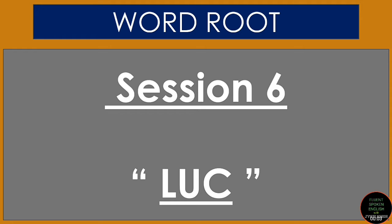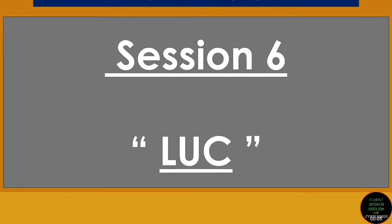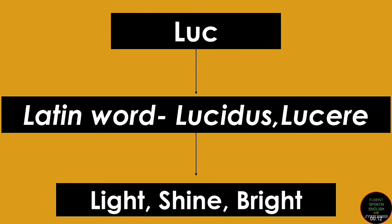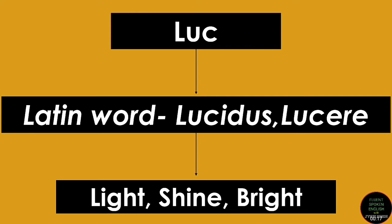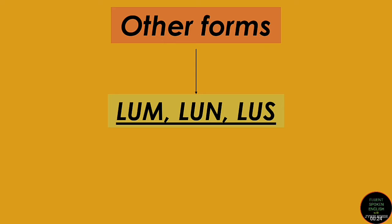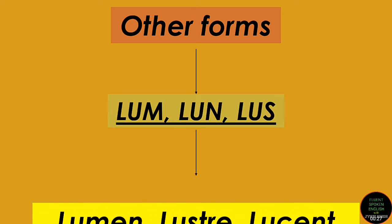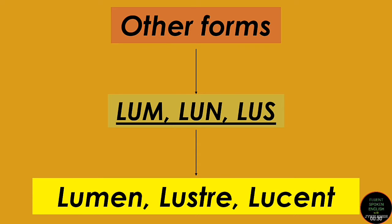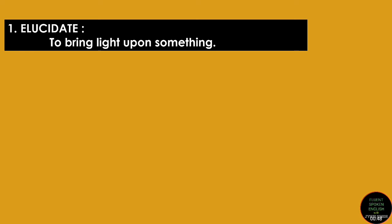Session 6 and the word root is L-U-C. It is taken from a Latin word 'lucidus' or 'lucere' which means light, shine, or very bright. There are various forms of LUC — they could be L-U-M, L-U-N, L-U-S. For example: lumen, luster, lucent. So if you find the word root LUM, LUN, LUS, or LUC in any word, just connect that with light, brightness, or shine. Let's see 19 words made from the root word LUC.